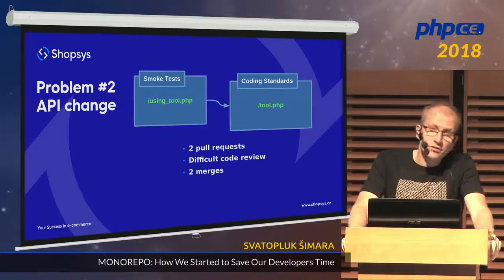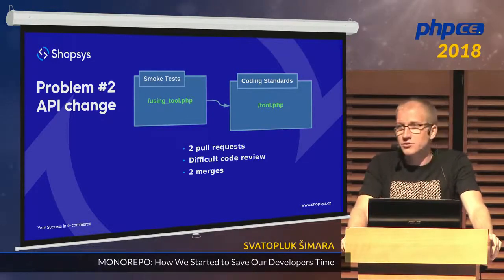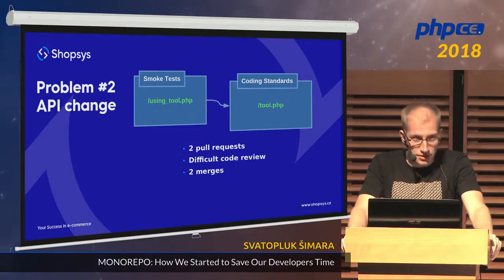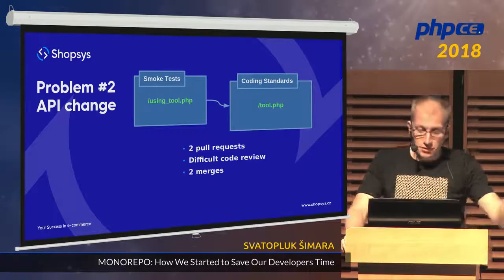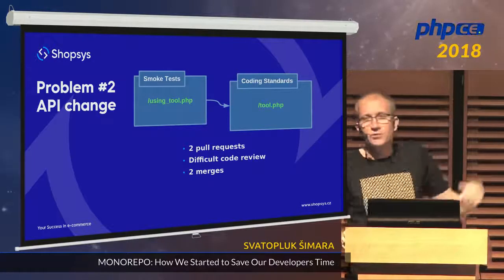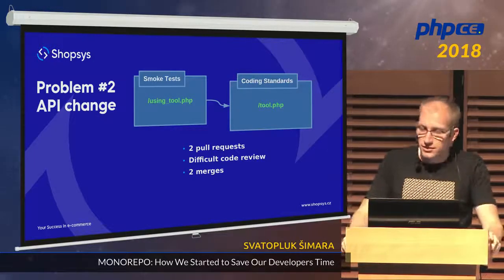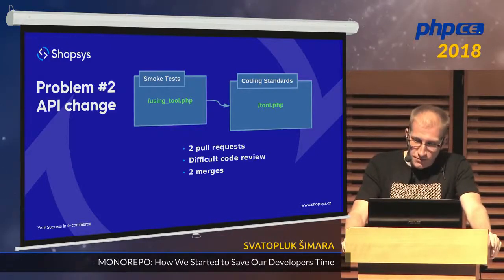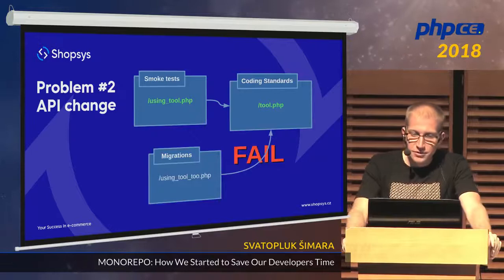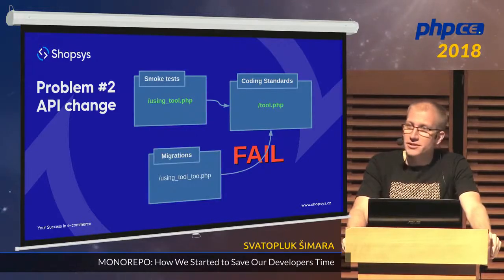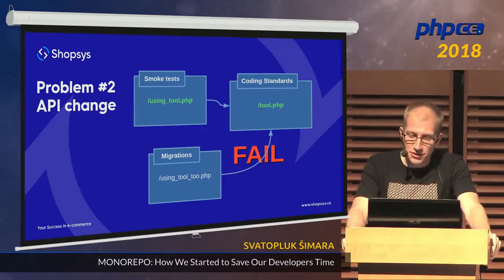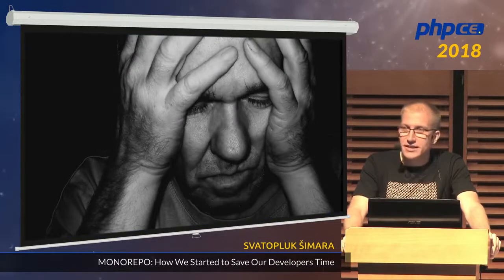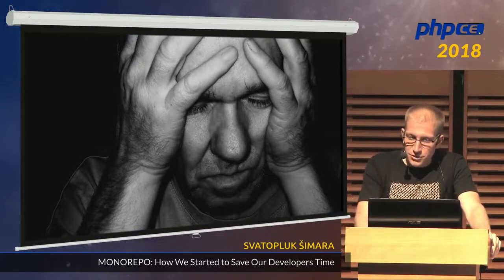Once code review is done, you continue to testing and business validation, then you can merge it. But first you have to merge coding standards before smoke tests — otherwise it won't work. And then you realize there's another repository that was also using coding standards. Not the best situation.